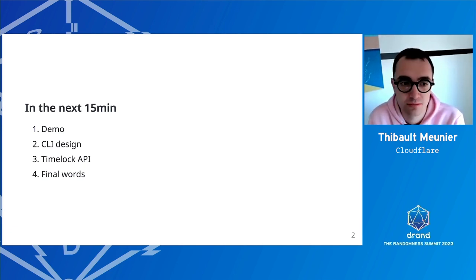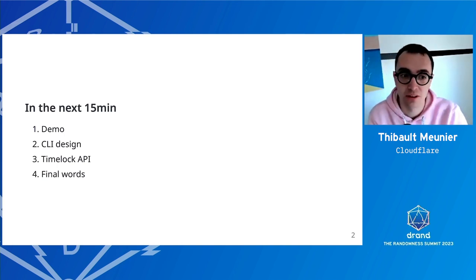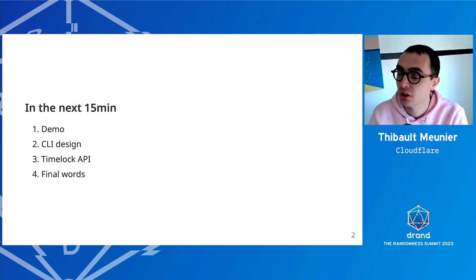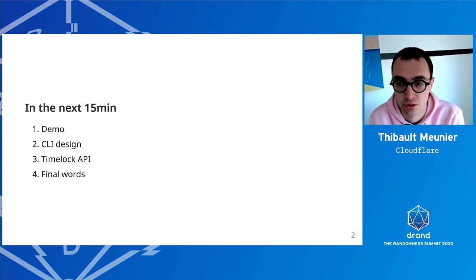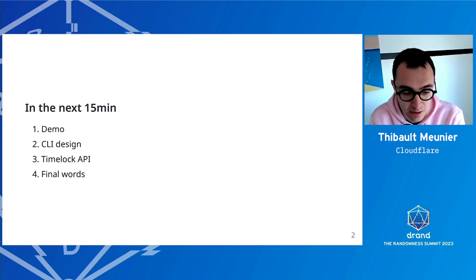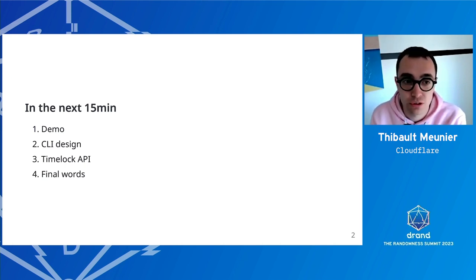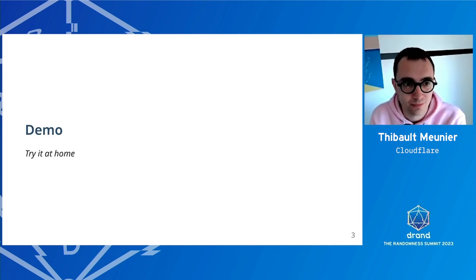Then we'll go over some decisions and design choices for the CLI, continue to dive deeper into how the timelock API has been designed and what changes it involved compared to the current implementation, and finally there will be some final words. The CLI is built in Rust, but this presentation is really more about the design considerations and how I wanted to make timelock easy to use.